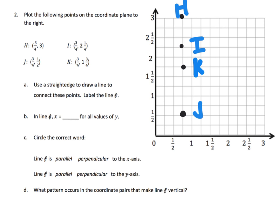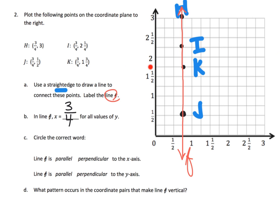We use a straight edge to connect the points and draw the line in red, then label it F using cursive lettering. In line F, the x-value is three-quarters every single time. The idea is for us to recognize that in a vertical line it's the x-coordinate that is the same every time, while in a horizontal line it was the y-coordinate that's the same every time.